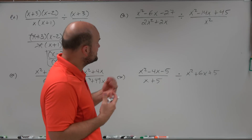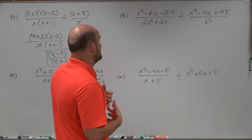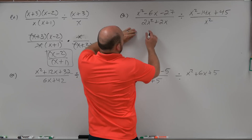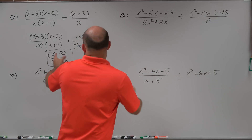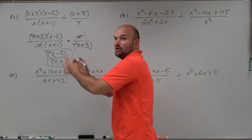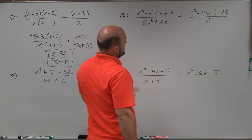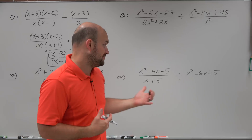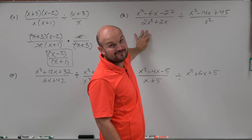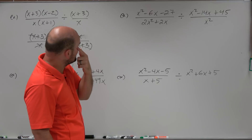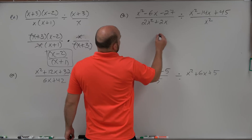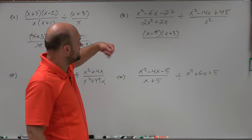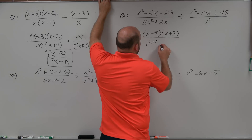In the next example, it's always important to factor and see what can be simplified. In the numerator, I need to find two numbers that multiply to give negative 27 and add to give negative 6 — that factors to (x-9)(x+3). In the denominator, I can see both terms share a 2 and an x, so I factor out 2x, leaving (x+1).